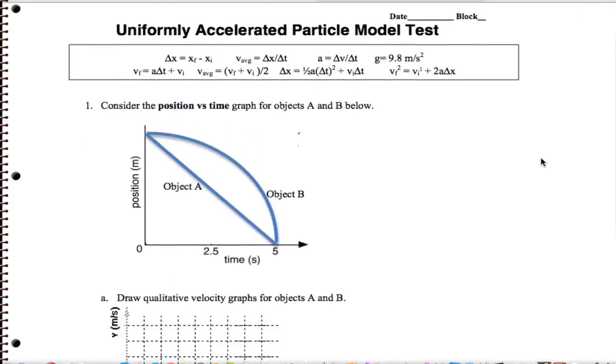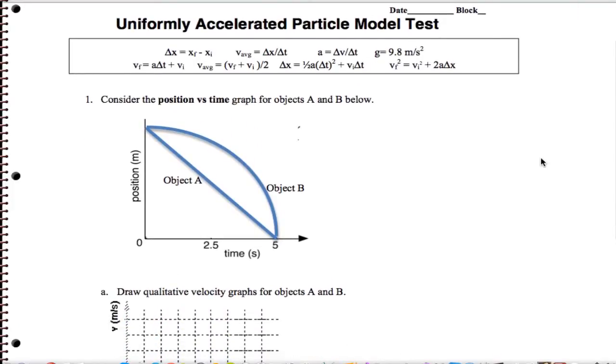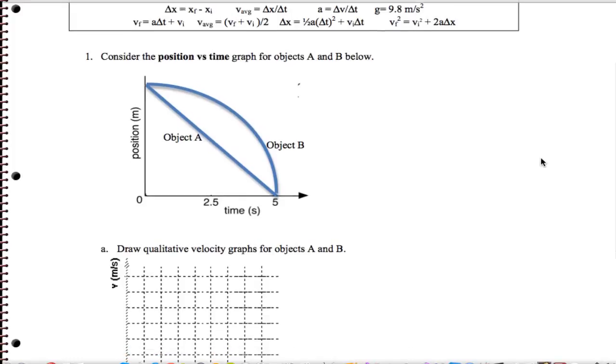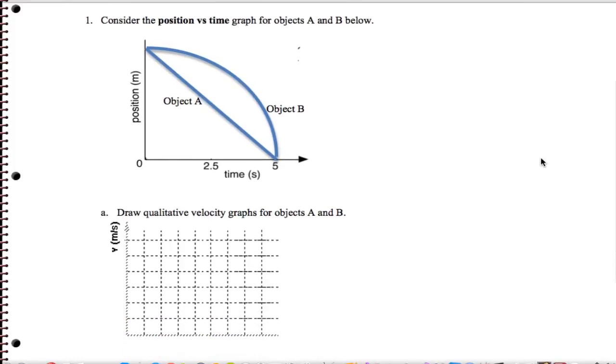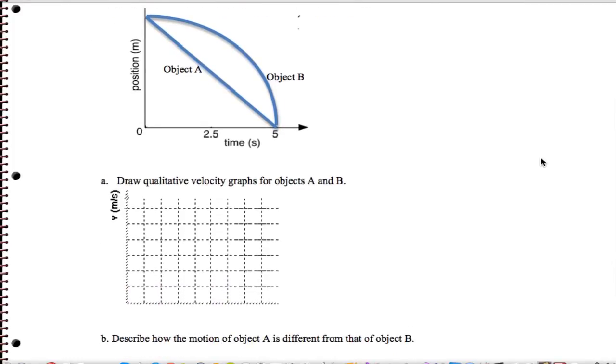All right, this is the practice exam key, video one. Let's go ahead and get started. So the first thing we want to do is draw the qualitative velocity graphs for objects A and B in this figure here.